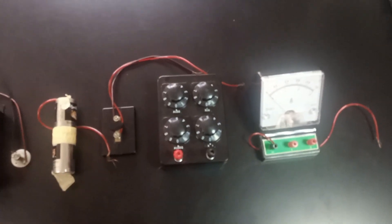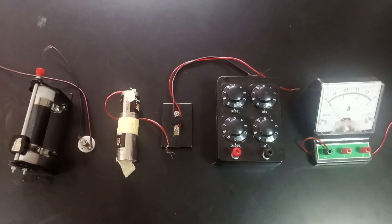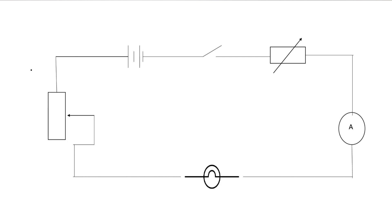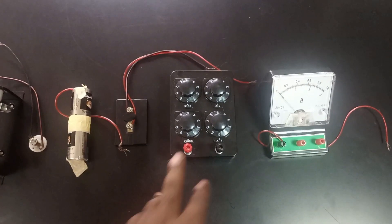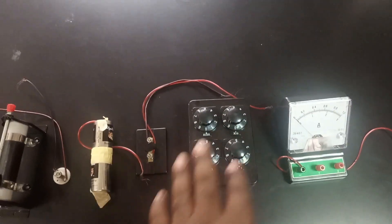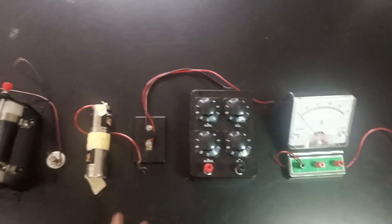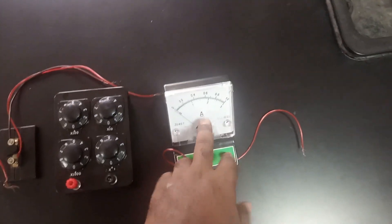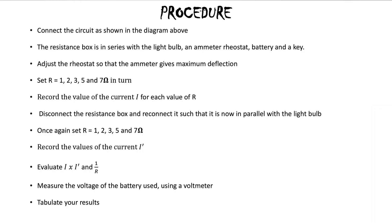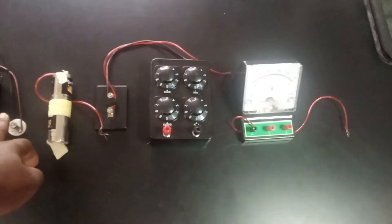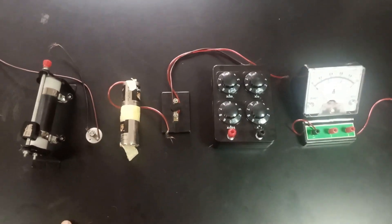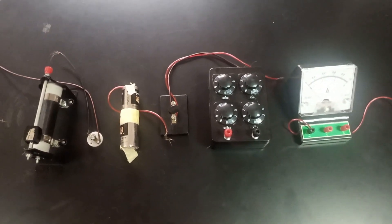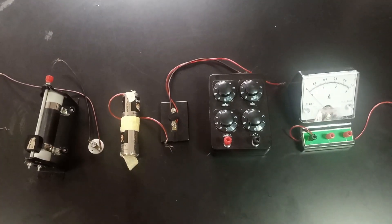Now we're going to set up this particular circuit the way you are seeing it on the diagram, and then set R at specific values of 1, 2, 3, 5, and 7, and find the corresponding ammeter reading and record that. We're also going to disconnect the resistance box and set it to be in parallel with the bulb, and then compare what the values of our current would be when it was in series and when it was in parallel.